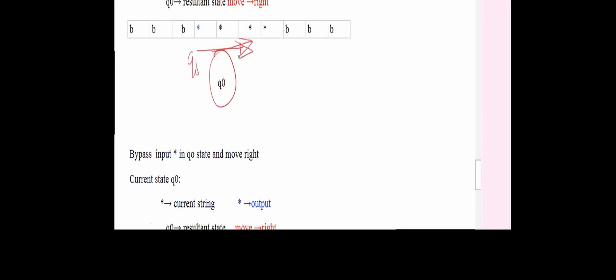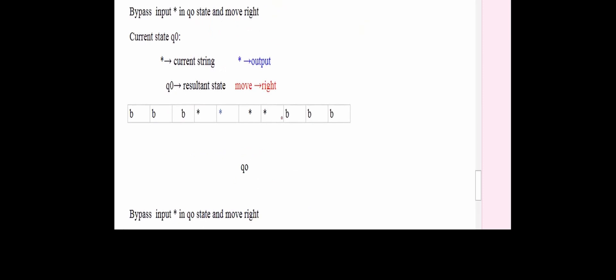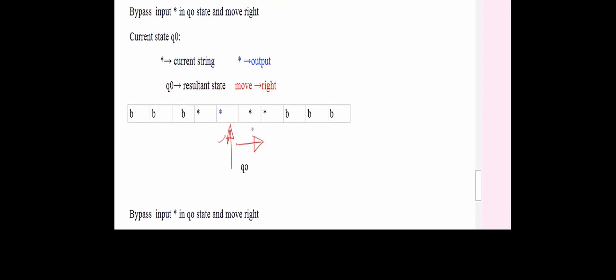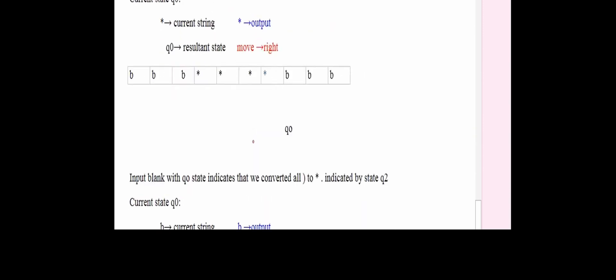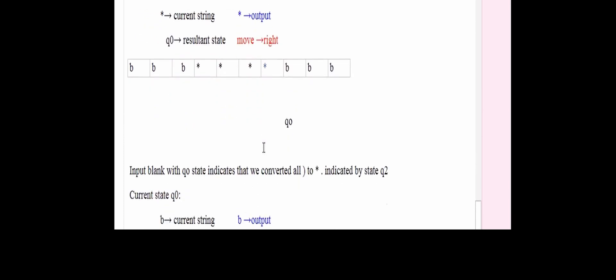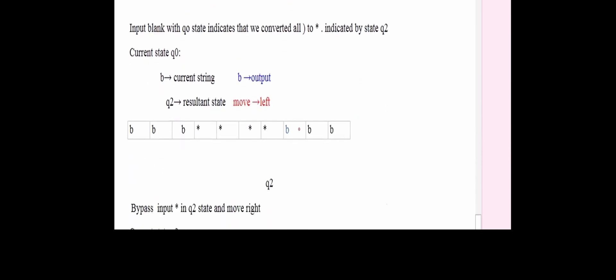While moving right from Q0, we bypass all asterisks, ignoring them and continuing right. Now all the parentheses have been changed to asterisks, so Q0 reaches the blank symbol. Q0 on blank means there is no closing parenthesis remaining — we have successfully converted all closing parentheses to asterisks. So we change the state from Q0 to Q2 and move left.